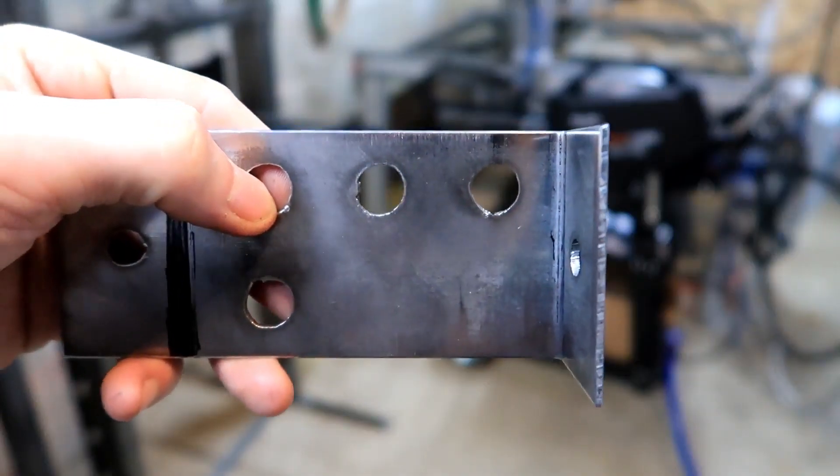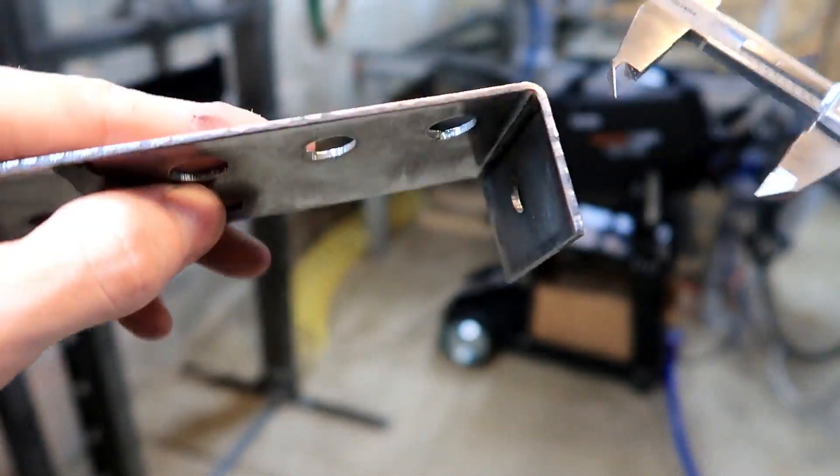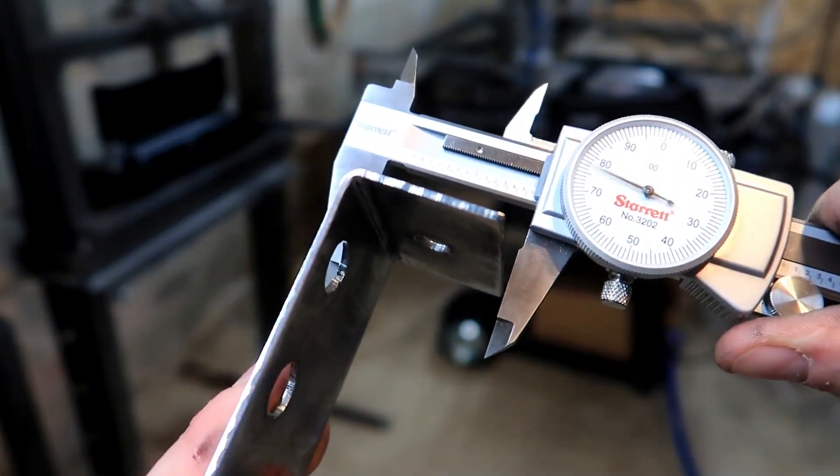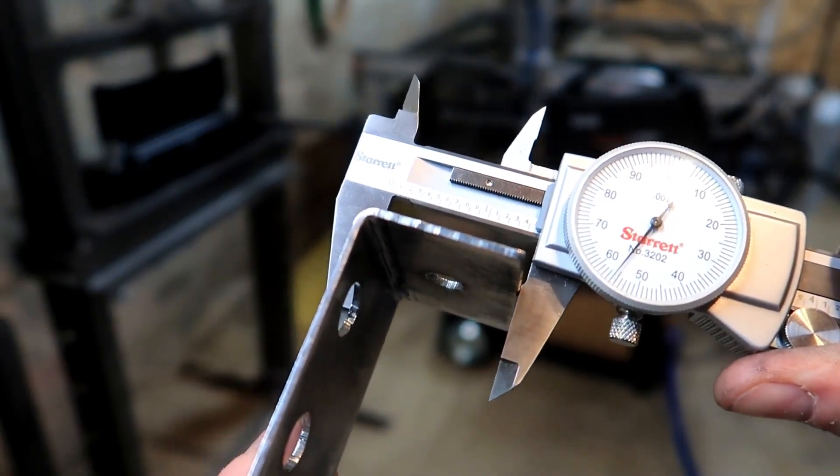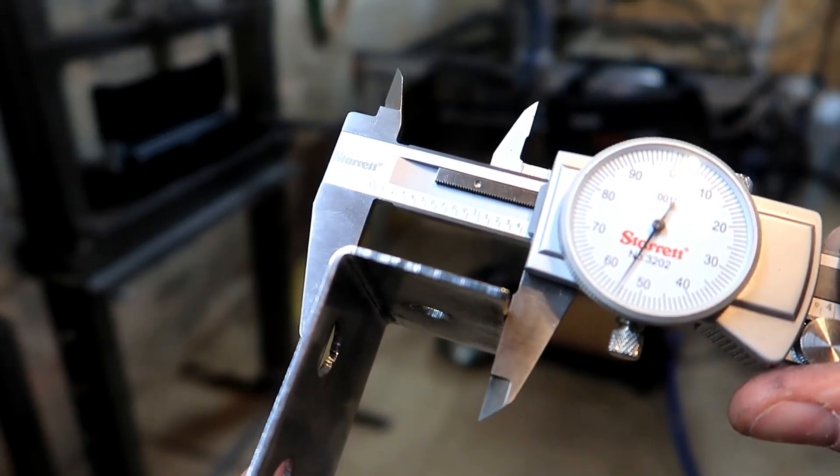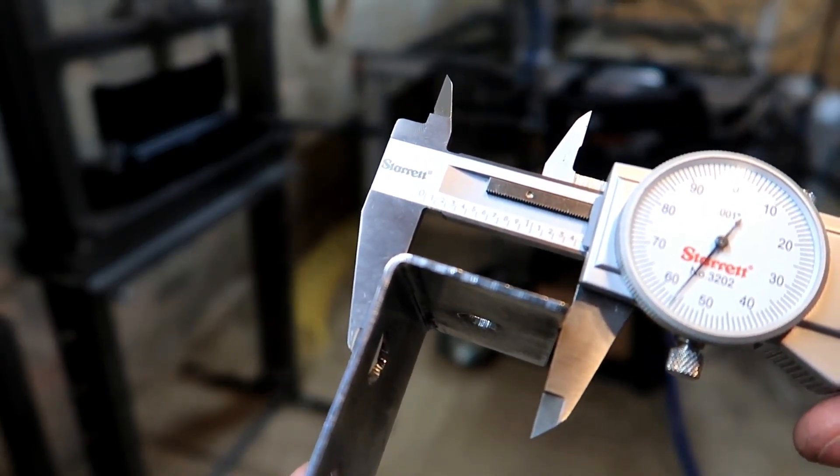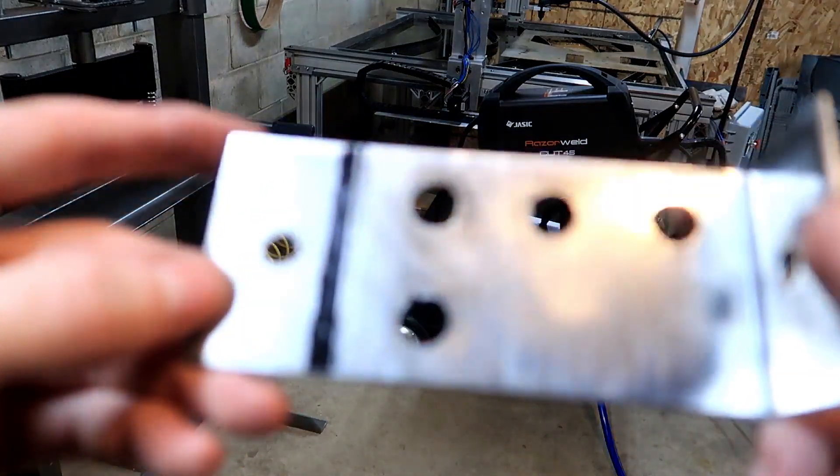If you will remember, the critical dimension was from this face to the top of this face, and that was 1.462. We got 1.455, seven thousandths under. I don't think that's too bad. What do you guys think? Now let's get the other side bent.